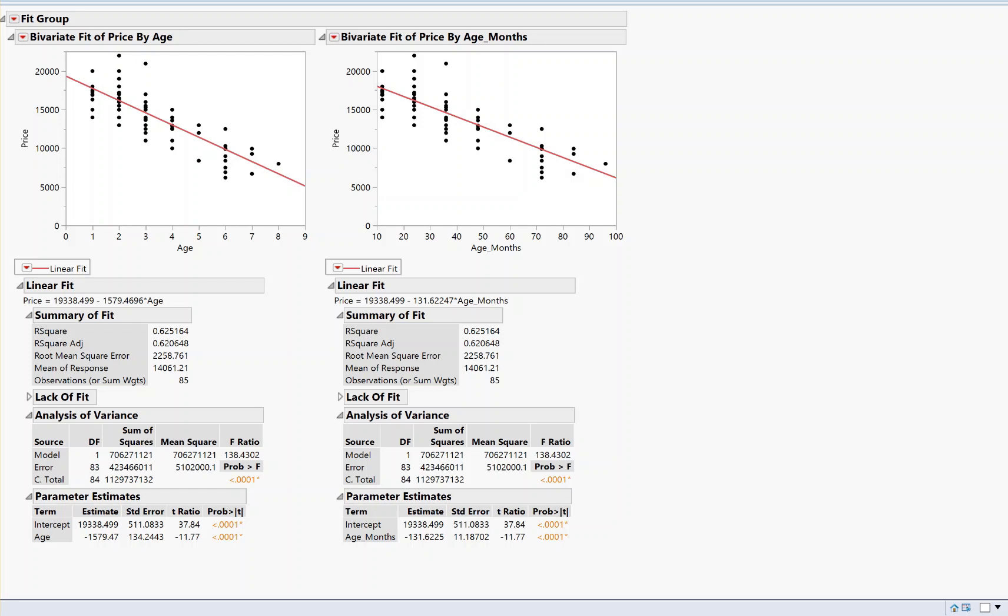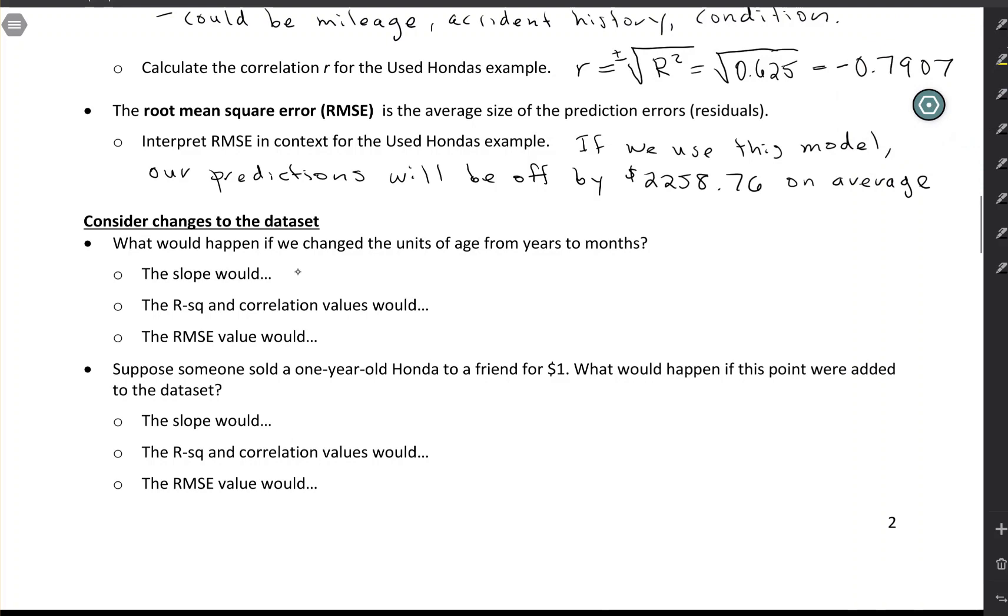And then root mean square error, that's about the size of your residuals. And residuals are in dollars, the units of price. We haven't changed the units for price, and so the root mean square error is going to be the same here. We're not losing any of our accuracy by changing from years to months. So let's record that.